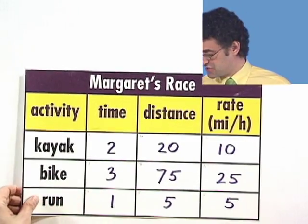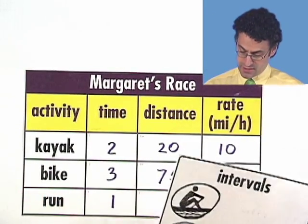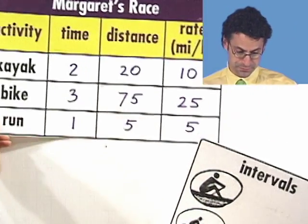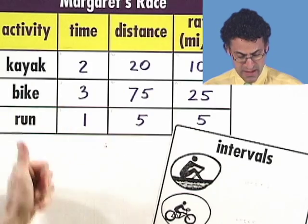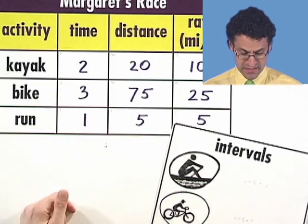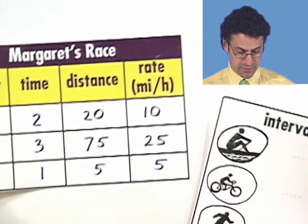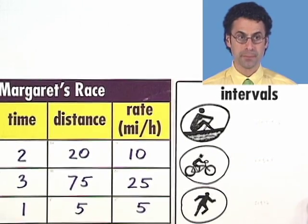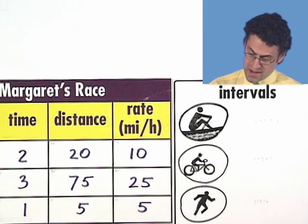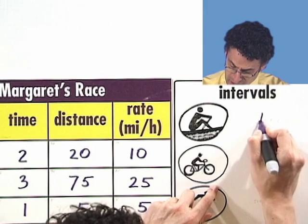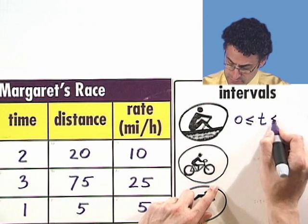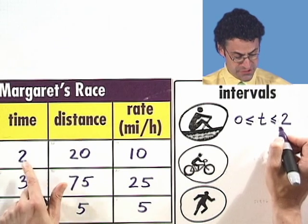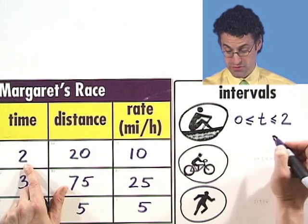Now let's take a look if we can actually put together where the intervals are going to be. Well, for the first two hours, she was doing kayaking. For the next three hours, she was doing biking. And for the last hour, she was doing running. So that actually determines the intervals. So the kayaking was for time between zero and two hours. The first two hours, she was doing kayaking.